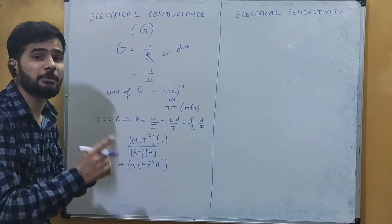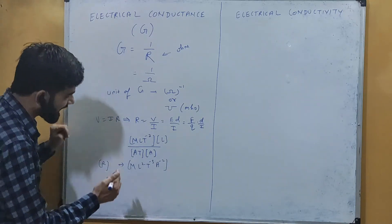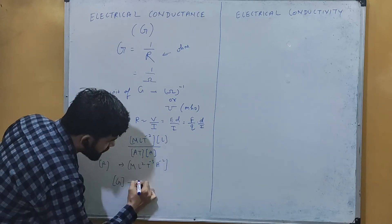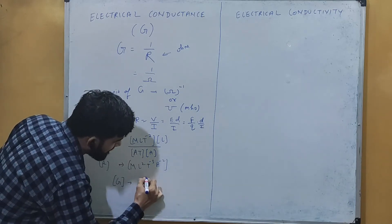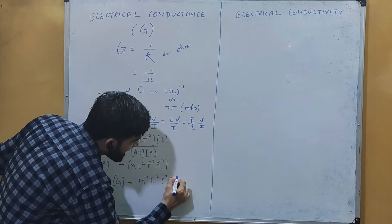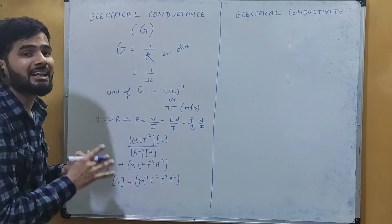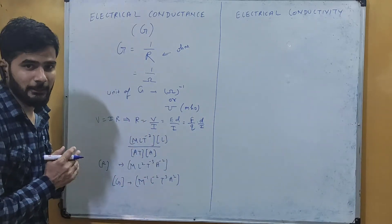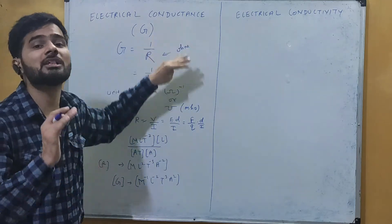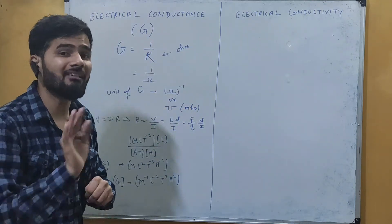Since conductance is the reciprocal of resistance, the dimensional formula for G is M⁻¹L⁻²T³A². This follows directly by inverting each exponent in the dimensional formula of resistance.